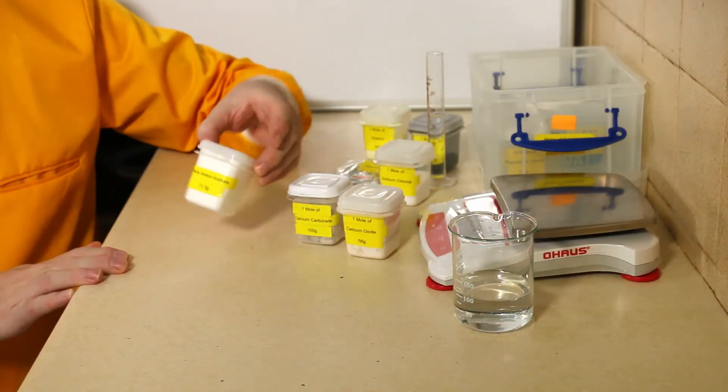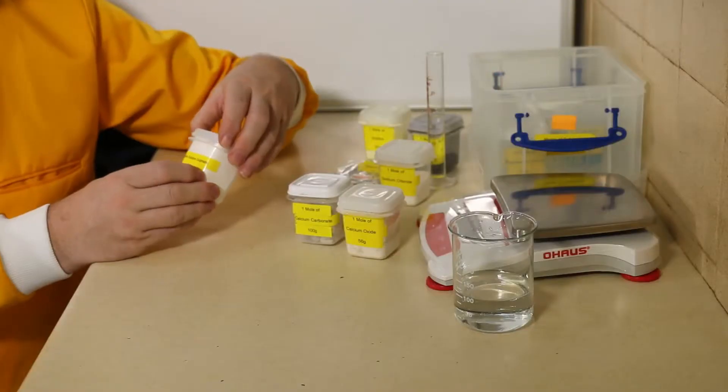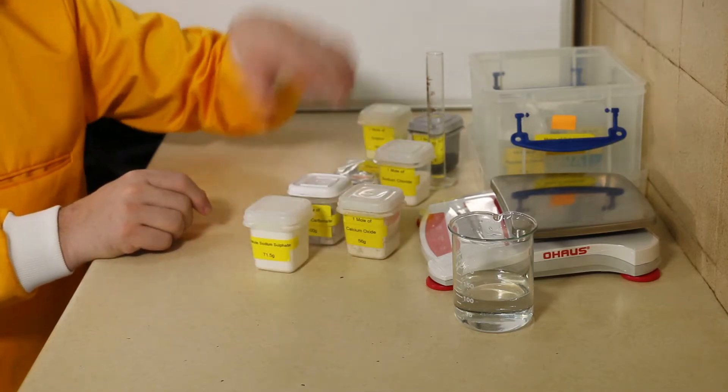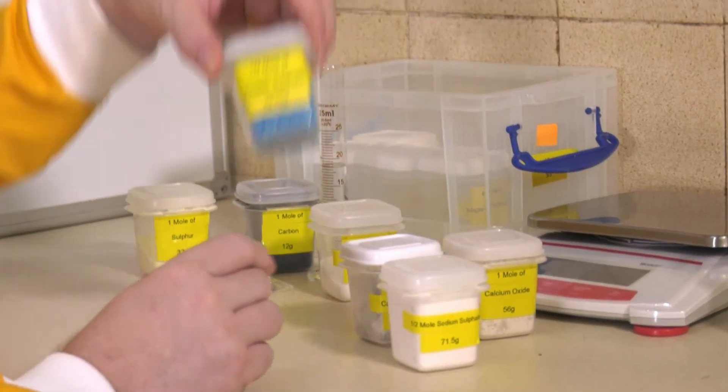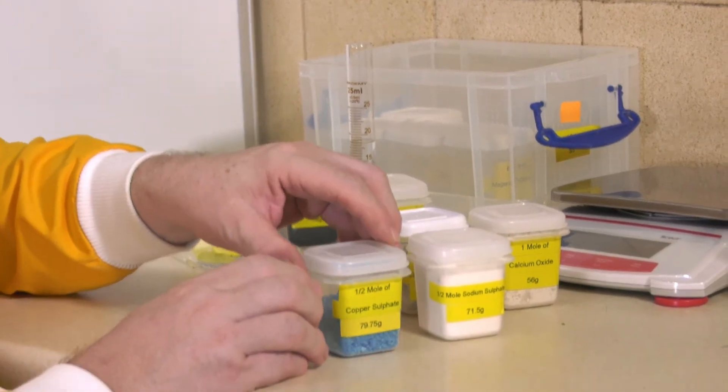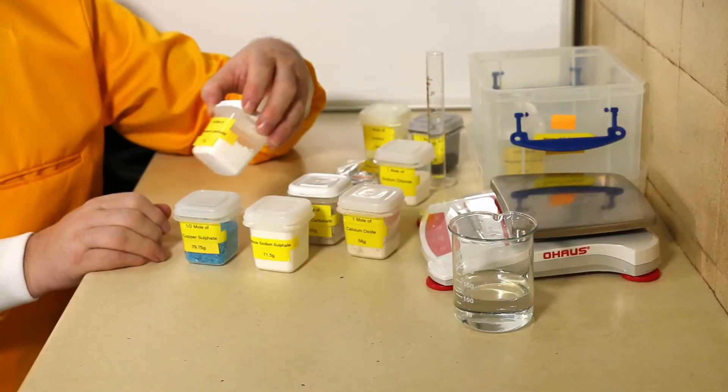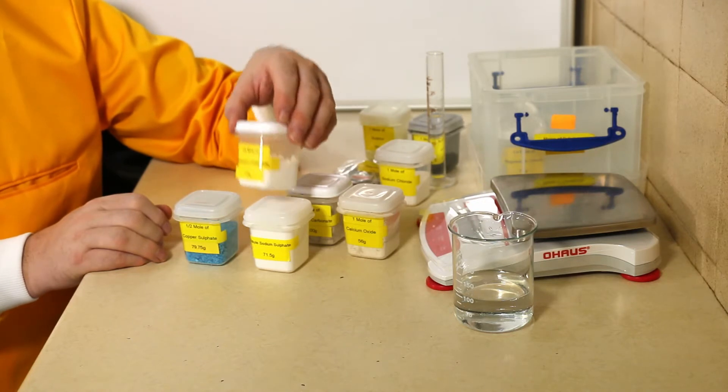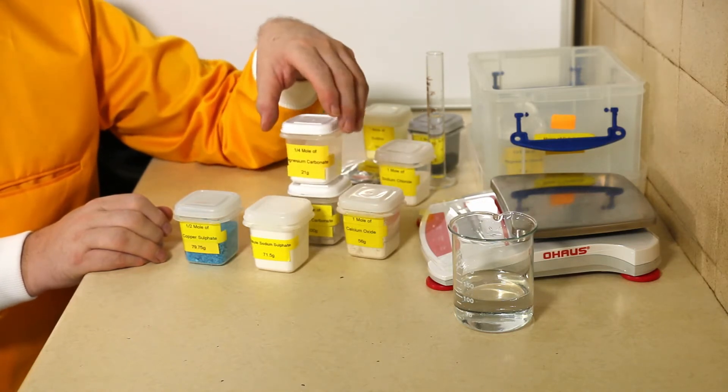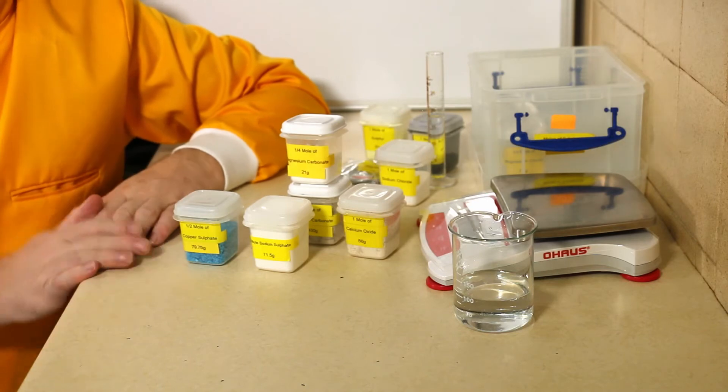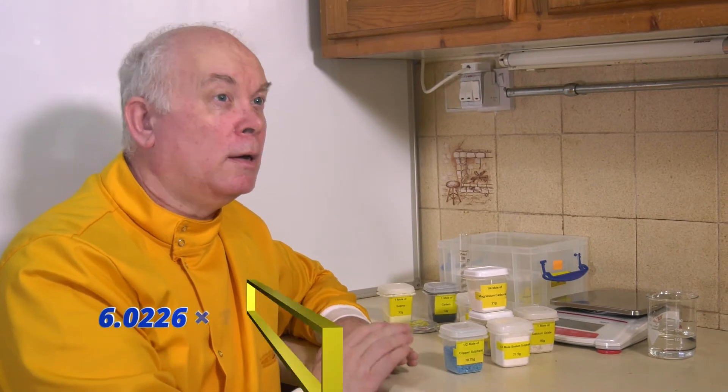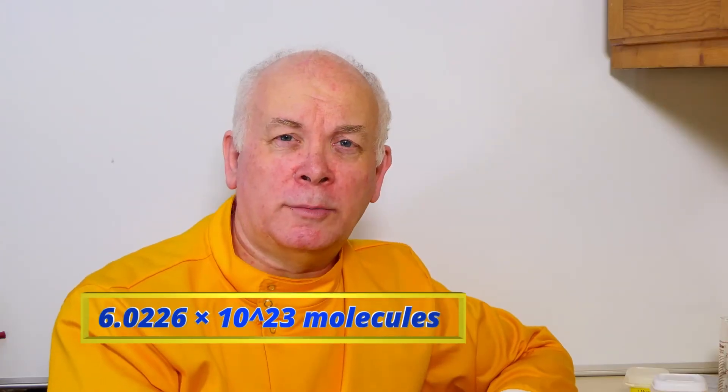And then my system went wrong a little bit, because in these containers I couldn't get one mole. I can only get half a mole of sodium sulfate, I could get half a mole of copper sulfate, and even worse, I can only get a quarter of a mole of magnesium carbonate. But all these things have the same thing in common - they have the same number of atoms or molecules: 6.02 times 10 to the 23, Avogadro's number.